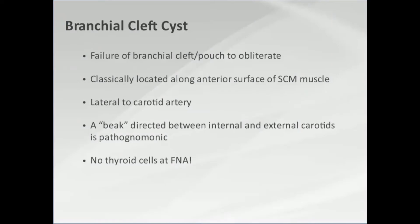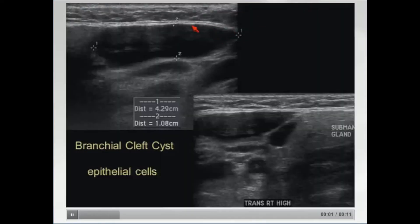Branchial cleft cysts occur when the branchial cleft does not obliterate. Classically they are on the anterior surface of the sternocleidomastoid muscle, lateral to the carotid artery. If you can see a beak going between the internal and external carotids, that is pathognomonic. If you aspirate it, you will not get thyroid cells.